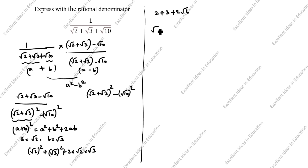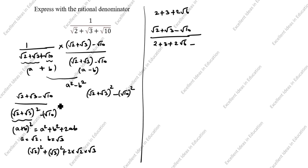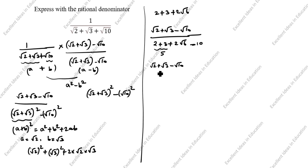So the numerator is root 2 plus root 3 minus root 10, divided by: 2 plus 3 is 5, plus 2 root 6, minus root 10 squared which is 10. So 5 minus 10 is minus 5, giving us denominator 2 root 6 minus 5. The result so far is (root 2 plus root 3 minus root 10) divided by (2 root 6 minus 5).